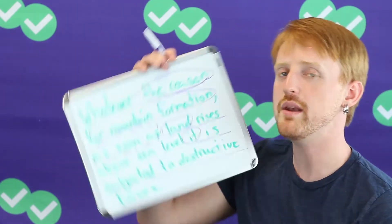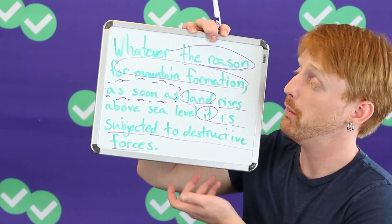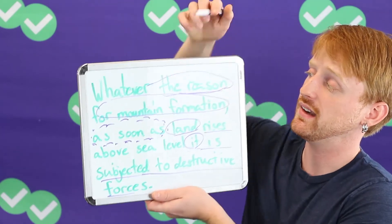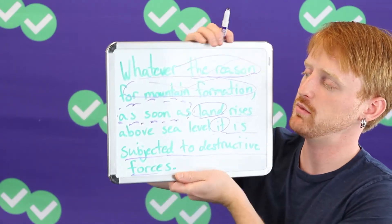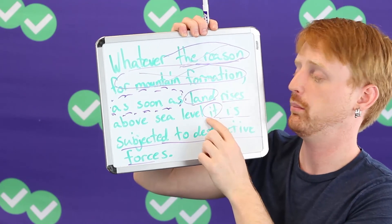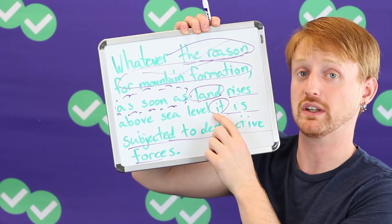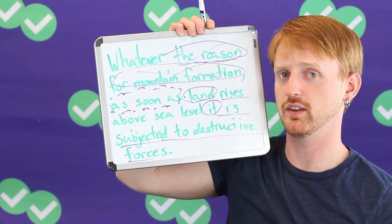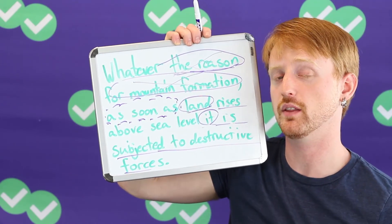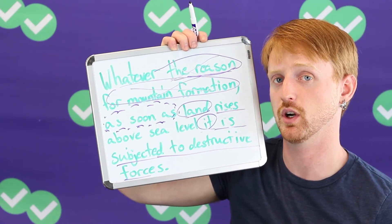We see that 'the reason for mountain formation' is one big noun, but it is not a subject. The subject is land, because of the word 'it' later. Complicated sentences can be hard to find the subject and verb in.